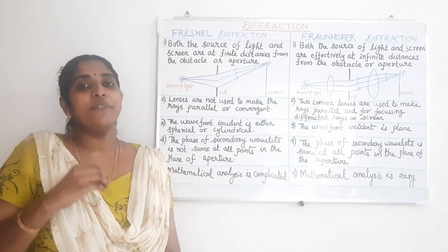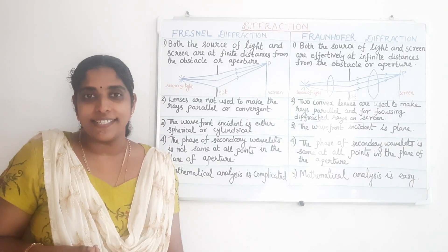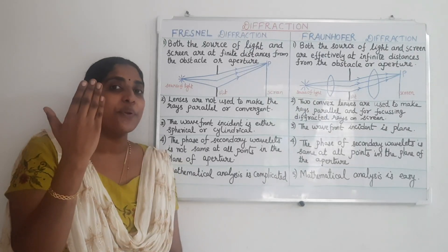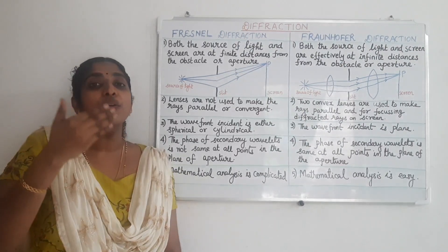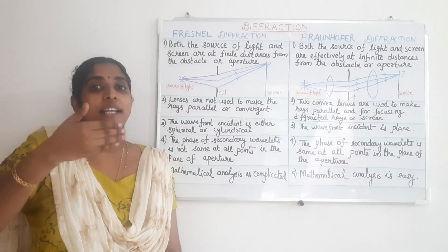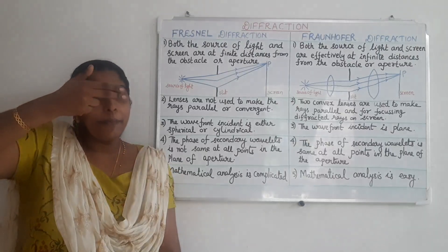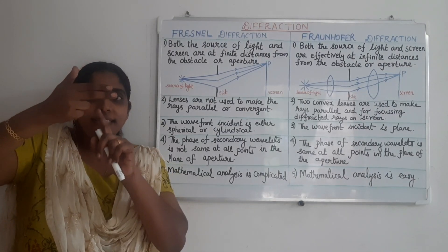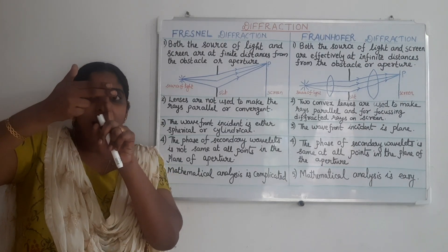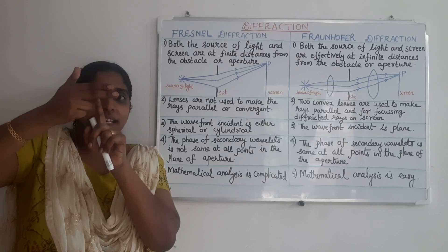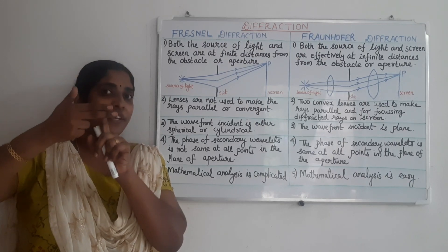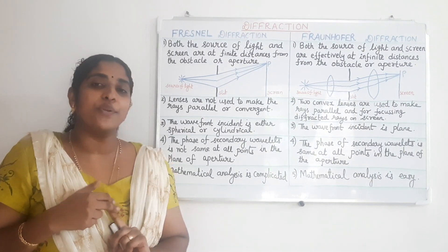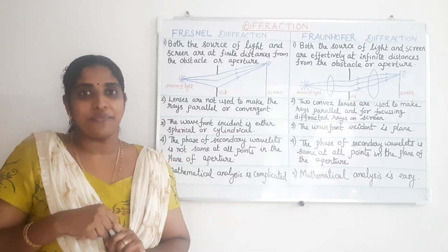One easy way to observe the diffraction of light is to hold your hand before a source of light, then observe the light through the gap between your two fingers. You can see some dark bands in the gap parallel to the fingers. These dark bands are produced due to the diffraction of light.